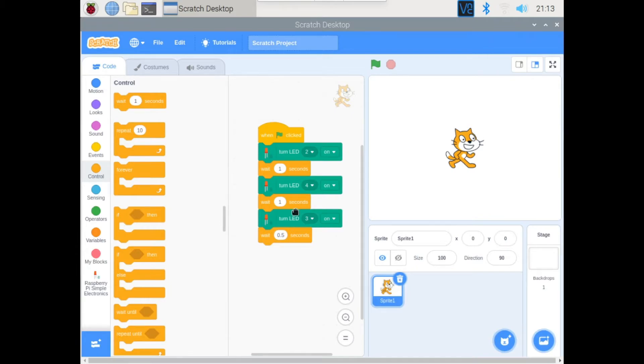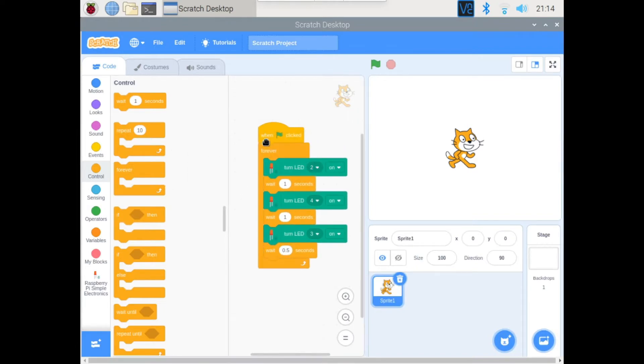To make it more clear: first we turn on red, then we wait one second. Then we turn on green - LED 4 is green - and then we also wait one second. Then we turn on yellow, and instead of one second we wait 0.5 seconds. Then we'll go to Control and we'll grab a forever block. Then we'll put all this code in that loop, so this will be repeated forever.